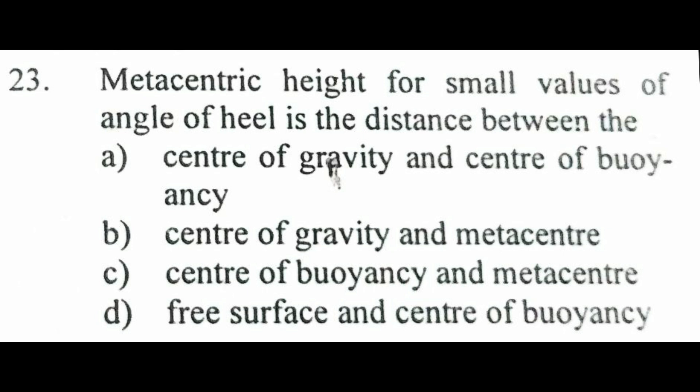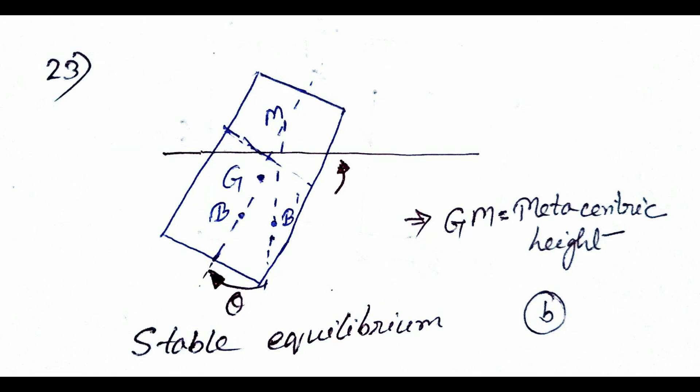Metacentric height for a small value angle: it is the distance between the center of buoyancy and the metacenter. Options are: center of buoyancy to metacenter, center of buoyancy to center of gravity, metacenter to free surface. The correct option is the distance between center of buoyancy and metacenter.